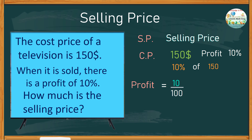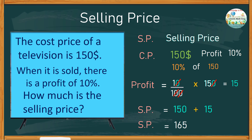The word 'of' means multiply, so we multiply 10 over 100 times 150. We can cancel the two zeros above and the two zeros below, leaving 1 times 15, which is 15. To find the selling price, we add the cost price of 150 plus the 10 percent value of 15, giving the same answer of 165. You can use whichever method is easier for you.